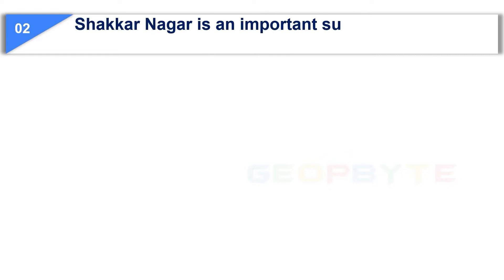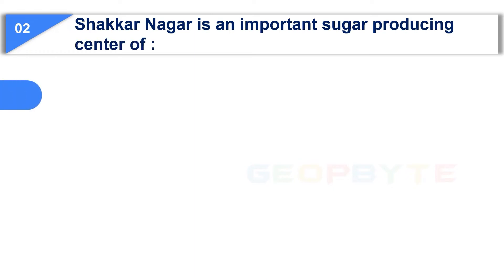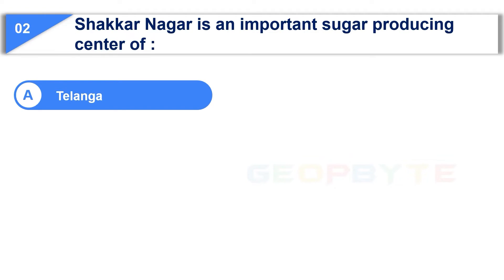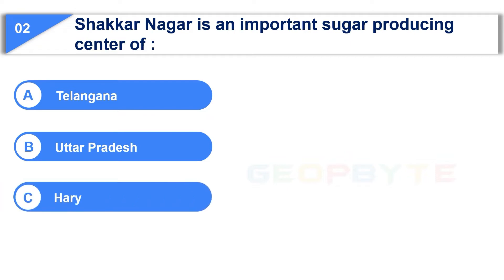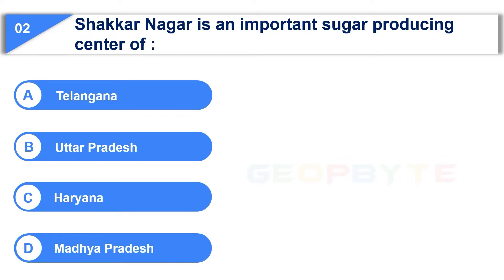The second question is: Shakaranagar is an important sugar producing centre of — Option A: Telangana, Option B: Uttar Pradesh, Option C: Haryana, Option D: Madhya Pradesh.